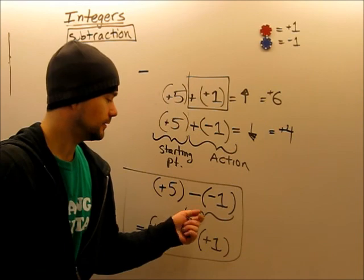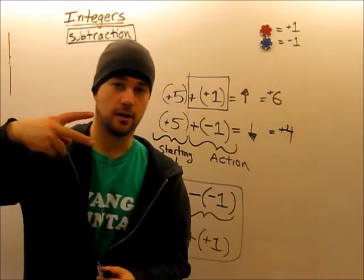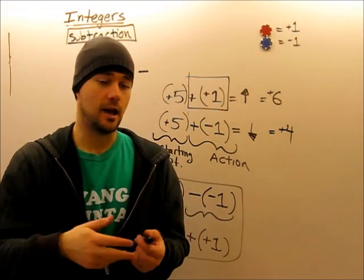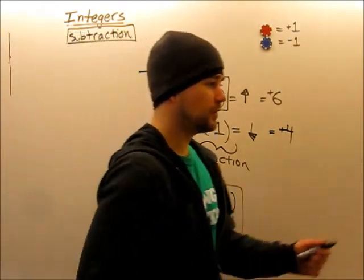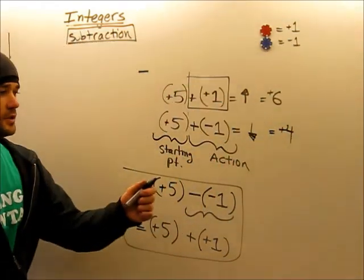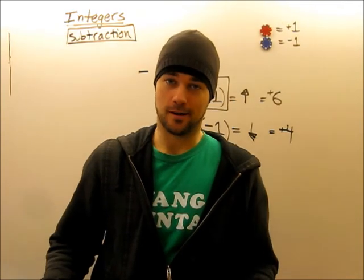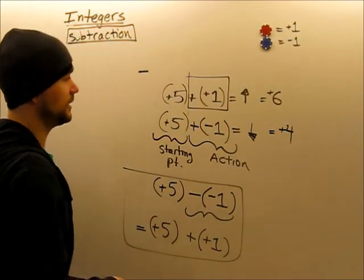So, when you see a negative and a negative, I want you to think two reversals, they undo each other, because when you reverse once, and then reverse again, you're back where you started from. I'm going to sum this up right here.